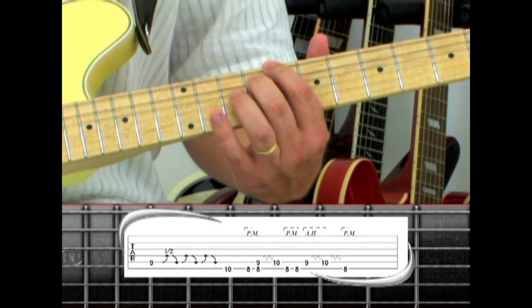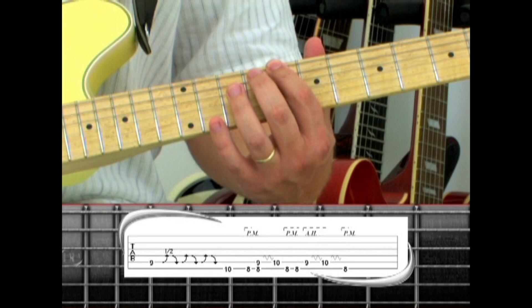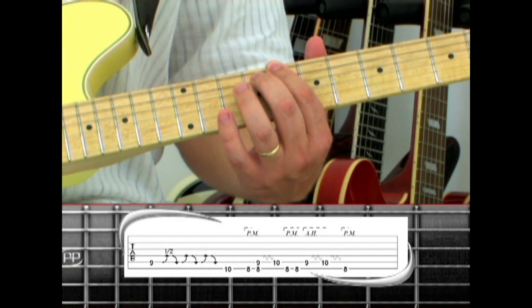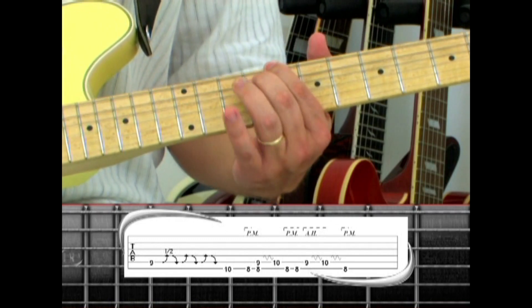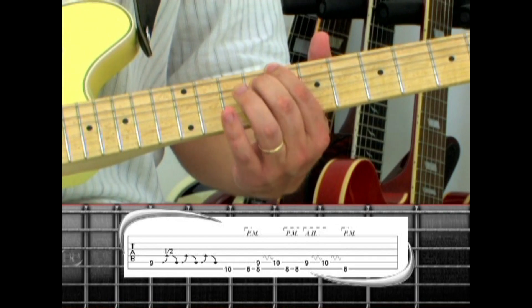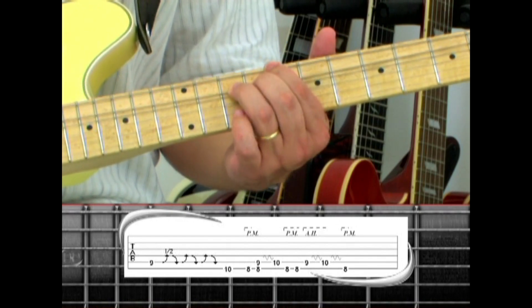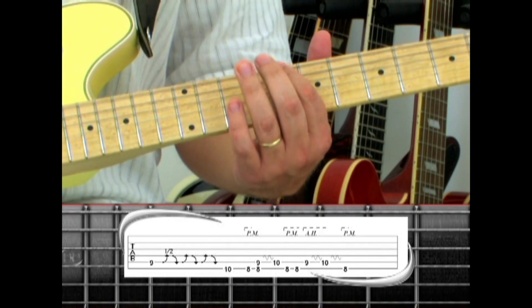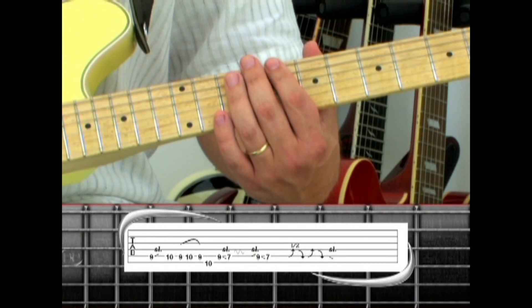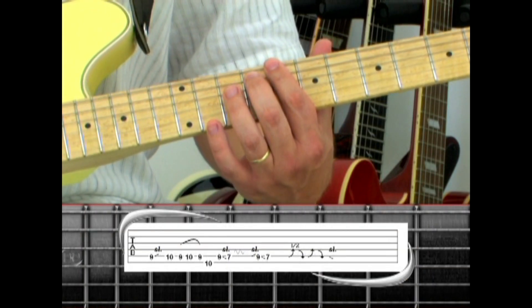Double palm-mute on 6th string 8. 5th string 9 with pinch harmonics and vibrato. Then 10 with pinch harmonics and vibrato. Back to the palm-muted 6th string 8. End phrase 13 by sliding 5th string 9 up to 10.